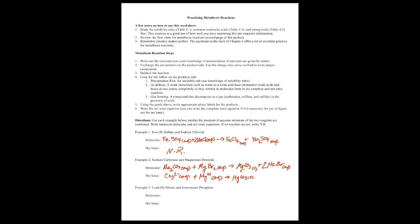For lead(II) nitrate and ammonium phosphate: lead(II) is Pb, and nitrate NO3 is 1-minus, so we need two — giving Pb(NO3)2 aqueous. Ammonium is NH4 and phosphate PO4 is 3-minus, so that's (NH4)3PO4 aqueous. Doing the partner exchange: we get Pb3(PO4)2 using the criss-cross method — Pb is 2+ and PO4 is 3-minus. Our other product is ammonium nitrate, NH4NO3.